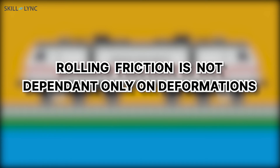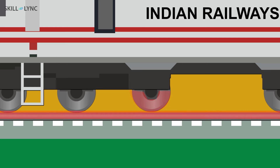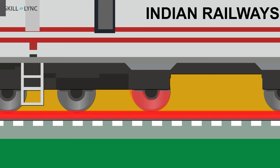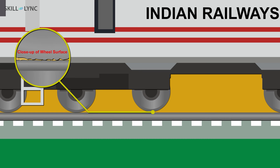Rolling friction is not just dependent on deformations. It also depends on the type of surface an object is rolling on. The surface of the wheel and the surface on which it is rolling is not always smooth. No matter how smooth a surface appears to the naked eye, it will have microscopic irregularities on its surface. These irregularities are the reason why the wheel is able to impart motion and also why it loses a bit of energy.